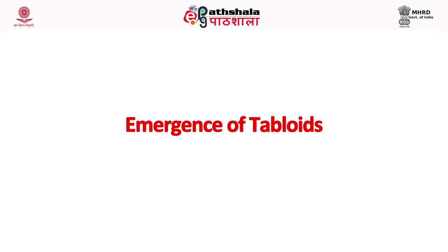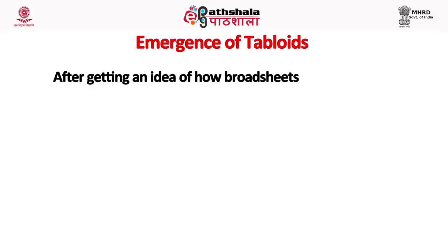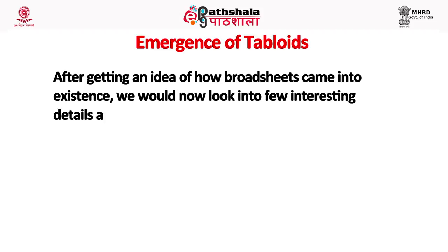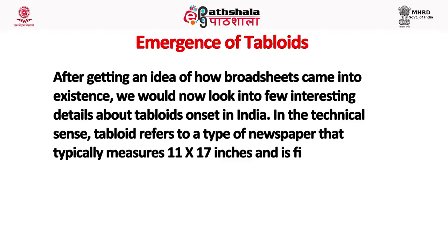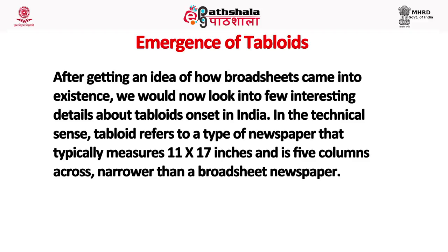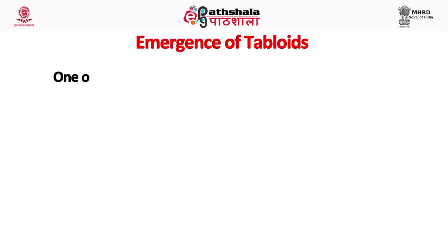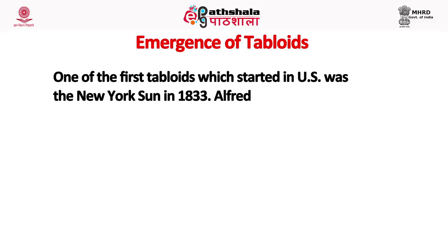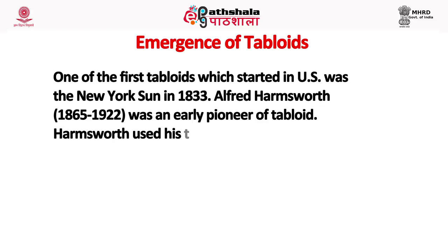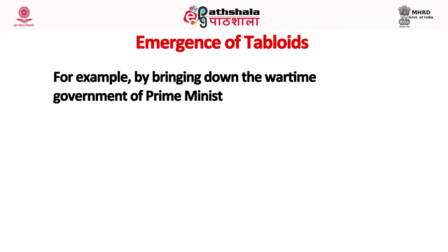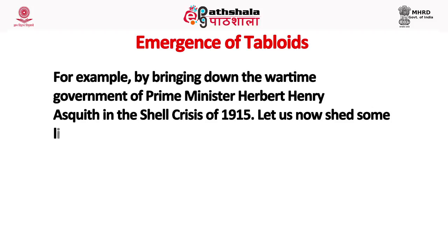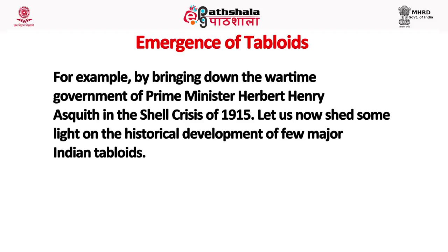After looking at how broadsheets came into existence, we now look at tabloids. In the technical sense, a tabloid refers to a type of newspaper that typically measures 11 by 17 inches and is five columns across, narrower than a broadsheet. One of the first tabloids started in the United States was the New York Sun in 1833. Alfred Harmsworth was an early pioneer of tabloid journalism, using his tabloid to influence public opinion, for example by bringing down the wartime government of Prime Minister Herbert Henry Asquith in the Shell Crisis of 1915.